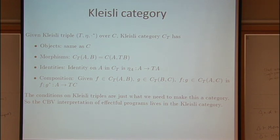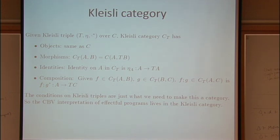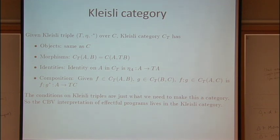Assume we start with our category C and it has a Kleisli triple T, eta, and the extension operation. We can make a new category C sub T called the Kleisli category. The objects of this category are the same as those we started with, but the morphisms are different. The collection of maps from A to B in the Kleisli category is defined to be the set of maps from A into T of B in the original category. To show this is a category we need identities and composition. The identity in C_T — a map from A to A — means we need a map from A to T of A, and we have just such a gadget: eta.